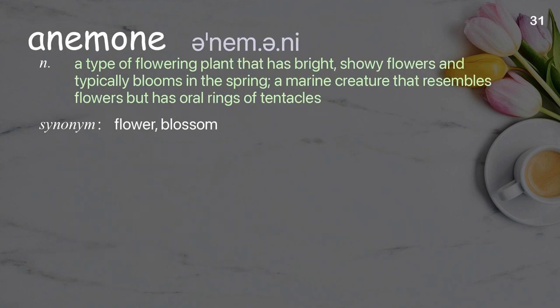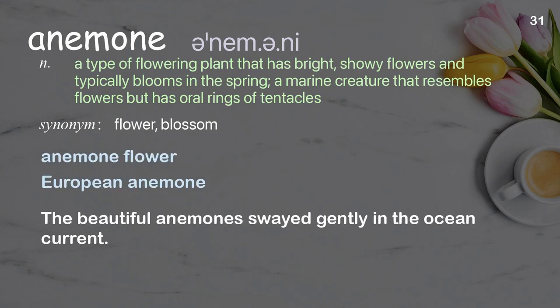Anemone. A type of flowering plant that has bright, showy flowers and typically blooms in the spring. Also, a marine creature that resembles flowers but has oral rings of tentacles. Examples: anemone flower, European anemone. The beautiful anemones swayed gently in the ocean current.